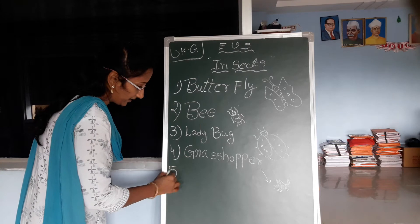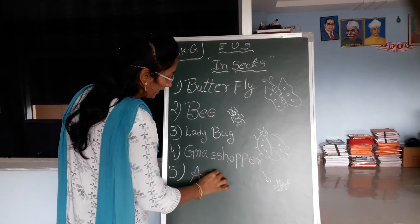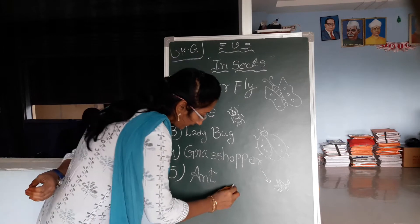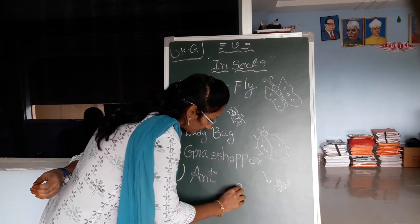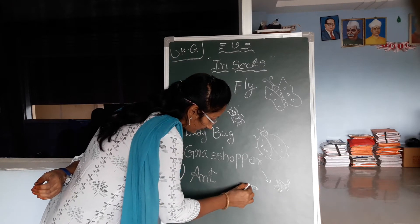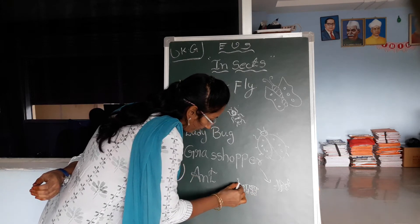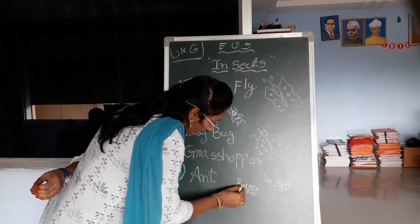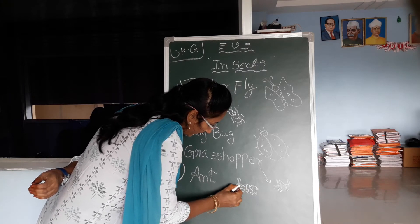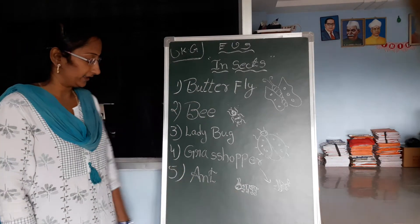Here is grasshopper. Okay, the fifth one is ant. Ant. Here is ant. What is this to us? This is called ant.